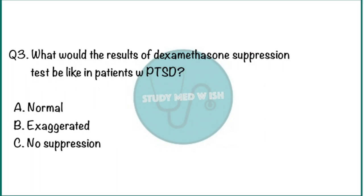Question 3: What would the results of the dexamethasone suppression test be like in patients with post-traumatic stress disorder? Option A, normal; option B, exaggerated; option C, no suppression.